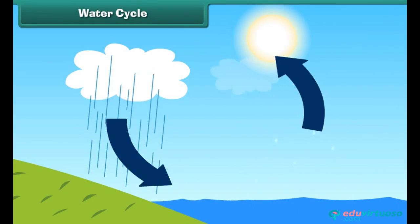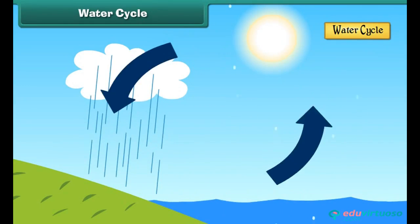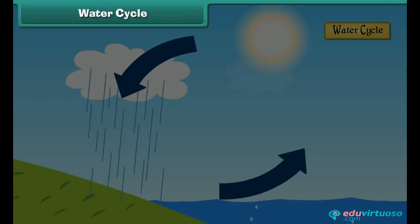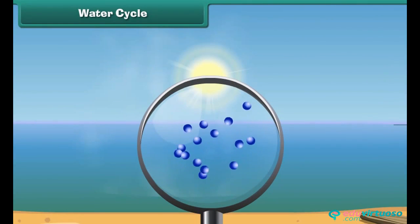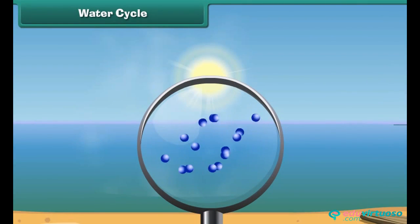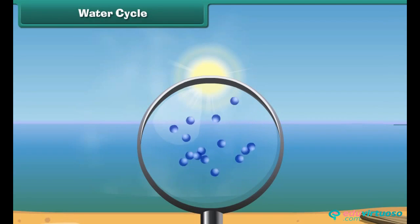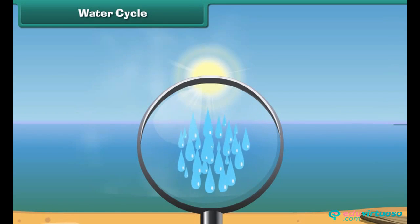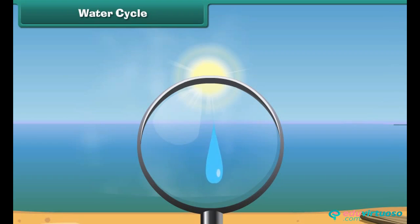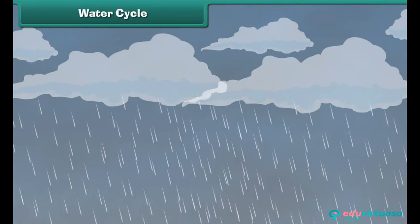Water cycle is the movement of water from earth to sky and then back to the earth. Water in ponds, rivers, and oceans gets heated by sun rays in the daytime. The heated water turns into water vapor and rises up. As it goes higher and higher, the water vapor cools down. Cooling changes the water vapor into water droplets. The water droplets come together and form clouds. Water droplets present in the clouds fall on earth as rain.